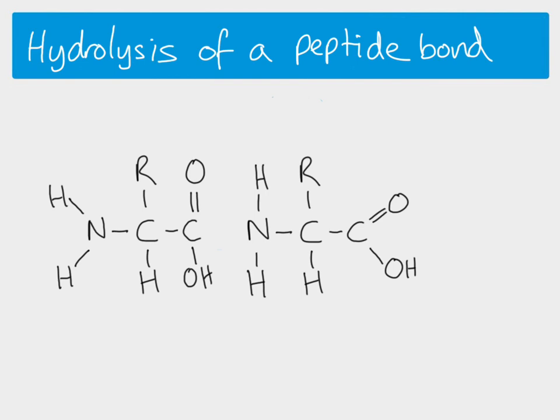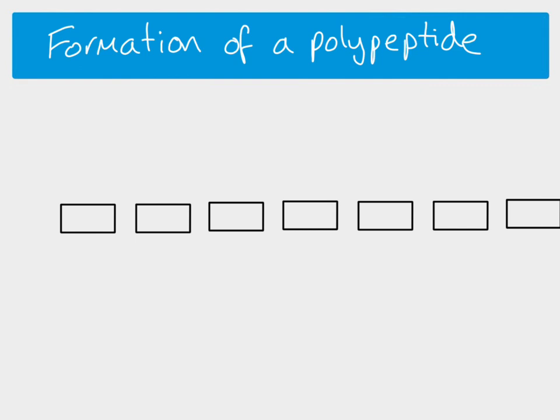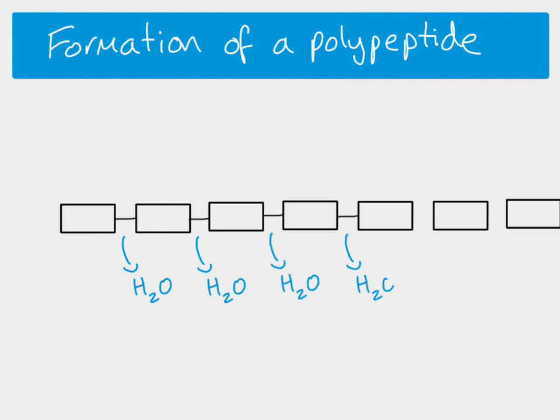That formation and hydrolysis of a peptide bond was shown with just two amino acids, but of course if you want to make a polypeptide — which is lots and lots of amino acids joined together in a row — it just means you have to do it many times. Each condensation reaction forms a peptide bond, a water molecule is removed, and then you'll end up with your polypeptide.